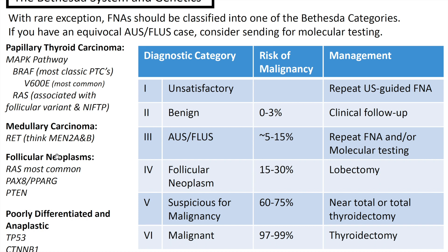For poorly differentiated and anaplastic carcinoma — the highly aggressive one that causes a hardened nodule typically in older women — the mutations are TP53 or CTNNB1. Don't forget the others mentioned above. That's it — just a quick tour of thyroid cytology. It's always helpful for me to review, and I hope you all enjoyed. If so, like and subscribe, and enjoy your weekend.